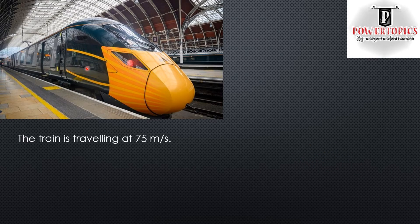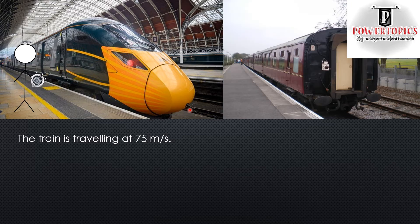There's a train travelling at 75 meters per second, meaning it is travelling 75 meters in one second. You are there to calculate the time it takes for the train to pass you. We've already got that, which is 3.6 seconds.